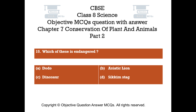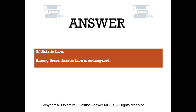Question number 15. Which of these is endangered? Option A dodo, Option B Asiatic lion, Option C dinosaur, Option D succumb stag. The right answer is Option B — Asiatic lion. Among these, Asiatic lion is endangered.